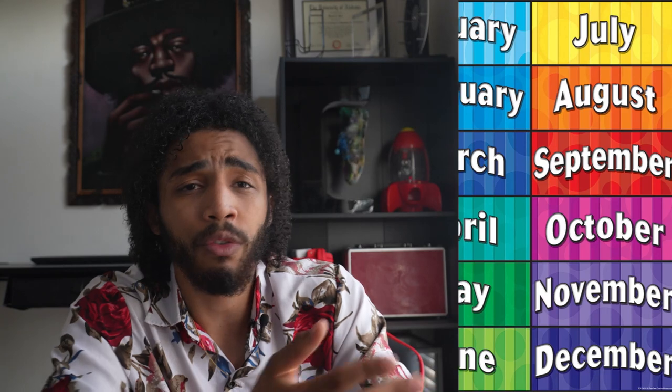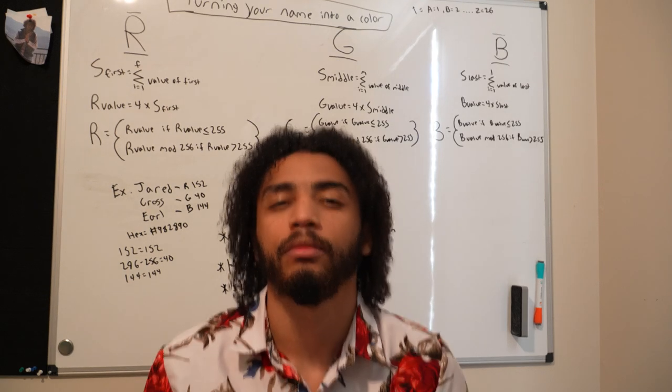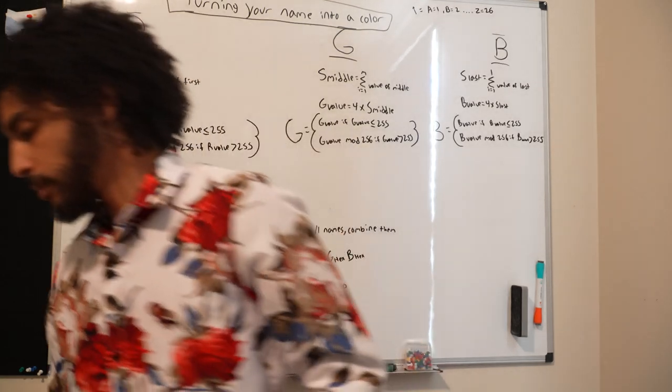If you want to turn your name into a color, watch this video. For the longest time I was curious if there was some way to have a custom color attached to your name — one that nobody else would have. I know you've seen images where it's like 'if your birthday is in May your color is green,' but that was always too surface level for me. Since I always excelled in math and have a passion for hex codes, I figured why not create a formula that any person can use with a standard calculator. So that's what I did.